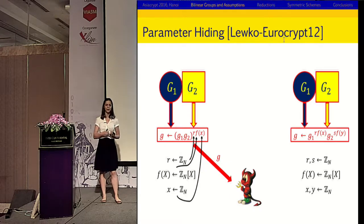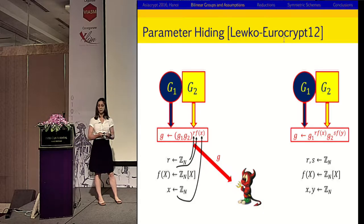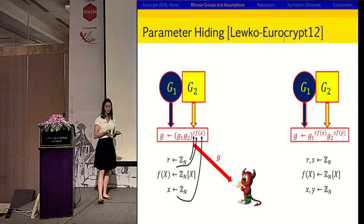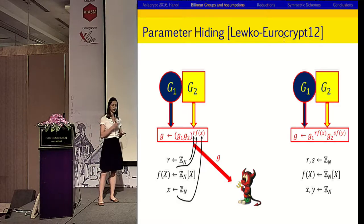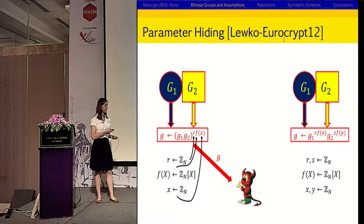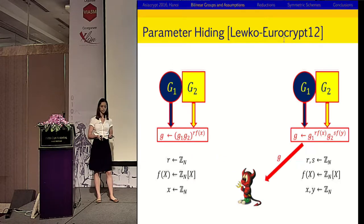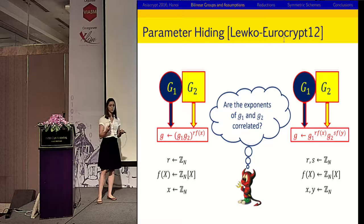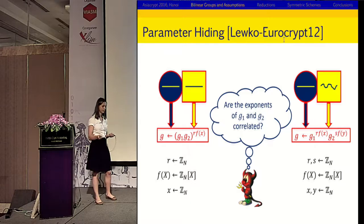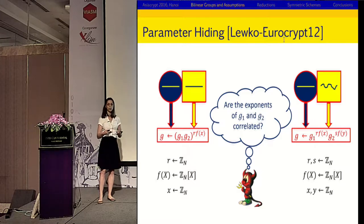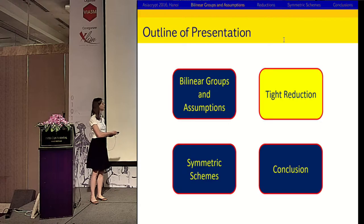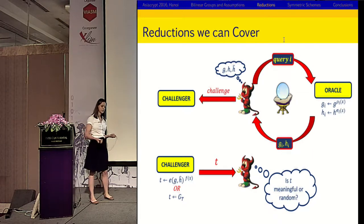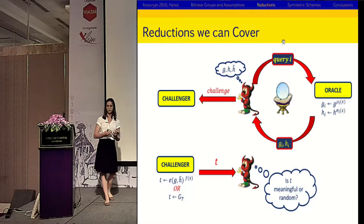The other thing we use is parameter hiding, which is not an assumption but a statistical property of the group. In asymmetric — or even just composite order — bilinear groups, it is implied by the Chinese Remainder Theorem. In this setting, the adversary is given a component in which the exponents of the subgroup generators are either correlated or they are not. We can prove, using the Chinese Remainder Theorem, that there is no adversary that can win this game — all it can do is guess.